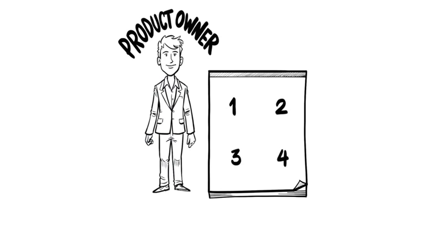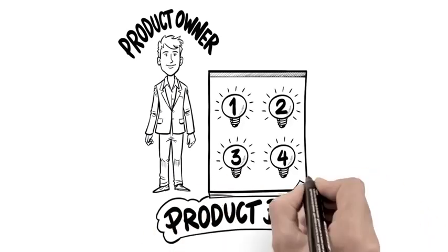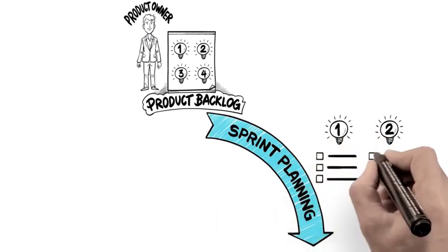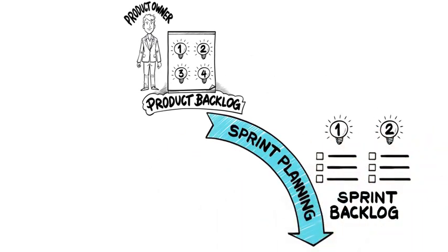A product owner creates the product backlog, a prioritized wish list. During sprint planning, the team pulls a chunk from the top of that list and decides how to complete it.